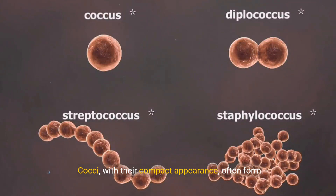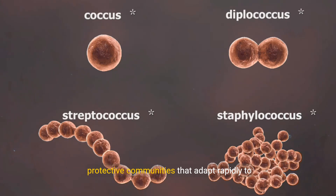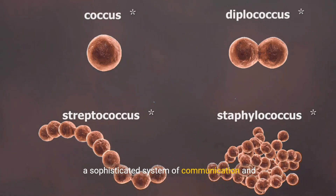Cocci, with their compact appearance, often form protective communities that adapt rapidly to environmental changes. Their subtle shape belies a sophisticated system of communication and survival.